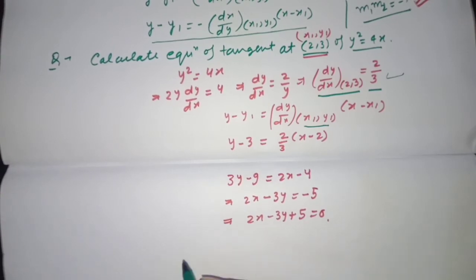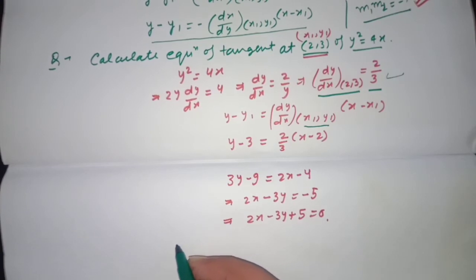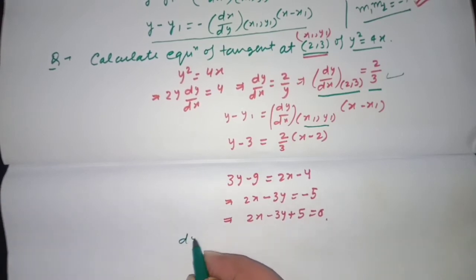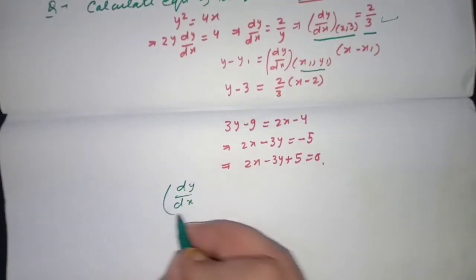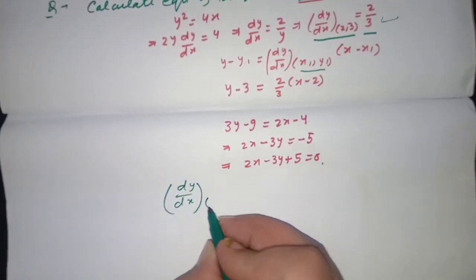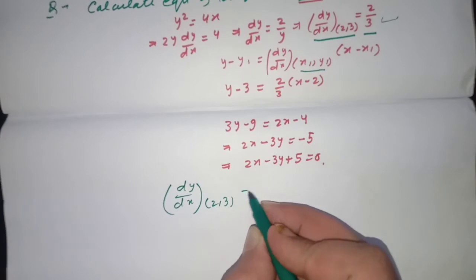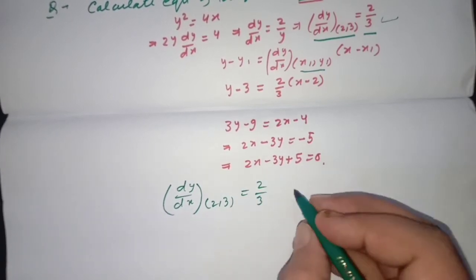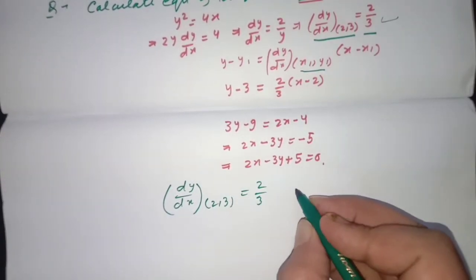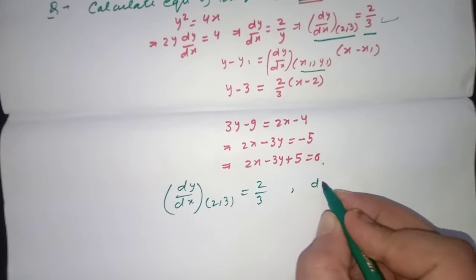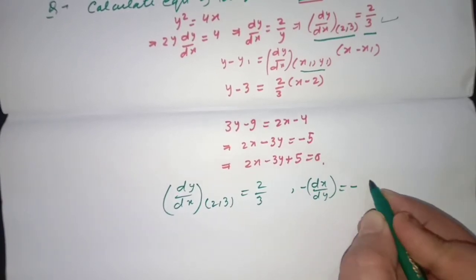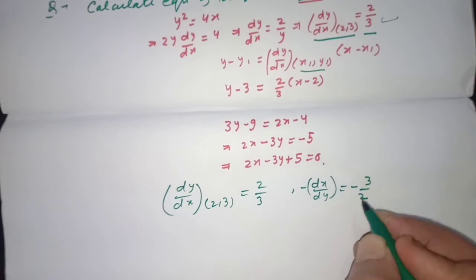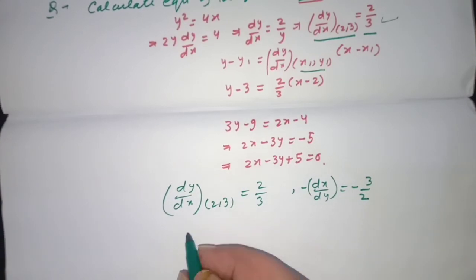For the normal, the slope we calculated as dy/dx at point (2, 3) was 2/3. So the normal slope will be −dx/dy, which means we take the negative reciprocal: −3/2. Then we substitute into the normal equation: y − y1 = −(3/2)(x − x1).